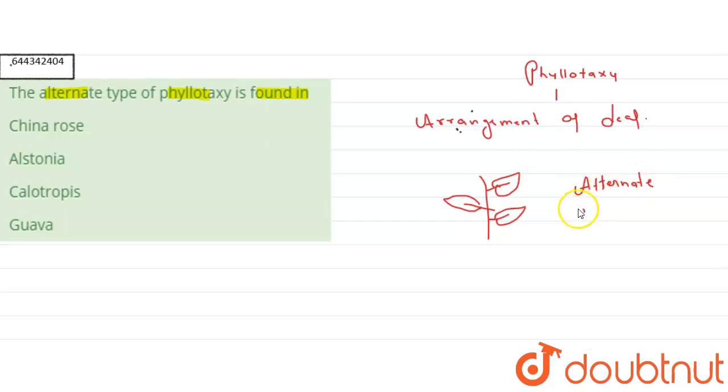Alternate arrangement is mainly seen in sunflower, China rose, mustard, and all that. So guys, here you see.